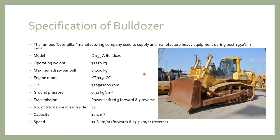The number of track shoes on each side is 41. The blade capacity of the bulldozer is 10.4 meter cube. The speed is 11.8 km/h in the forward movement and 13.7 km/h in the reverse movement. So these are the specifications of the D155A bulldozer.